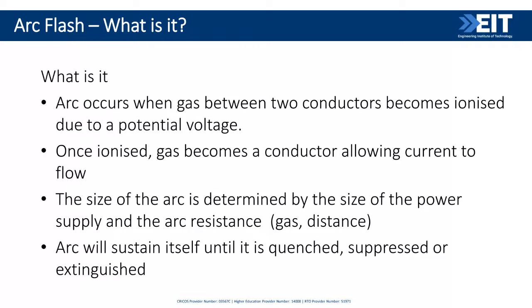Specifically, what does an arc flash involve? The arc is what occurs when a gas between two conductors — which is typically air, or in a switchgear mechanism it might be a different type of insulating gas — when that gas breaks down, it becomes ionised due to the potential voltage between your phases. When the gas becomes ionised, it can now become a conductor and you have current flowing from phase to phase — that's your arc. The size of that arc between your two conductors is determined by how much power you've got available to sustain that arc and what the resistance is between those conductors — essentially what is that gas composition and how far apart are the conductors.